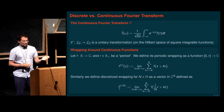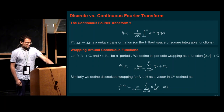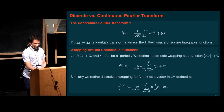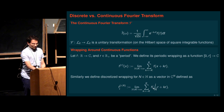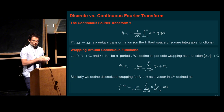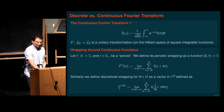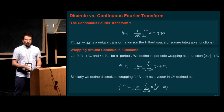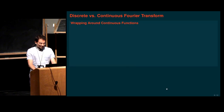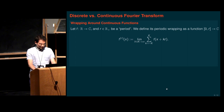We also define a discretized version of this wrapping, which produces an N-dimensional vector from the complex function. The j-th coordinate of this vector corresponds to the function value at j divided by N times R — the j-th mesh point within the full period R — doing the same periodic summation with integer multiples of the period over all the real line.